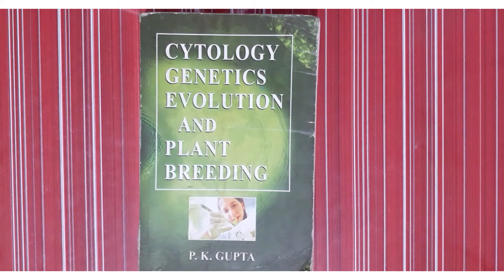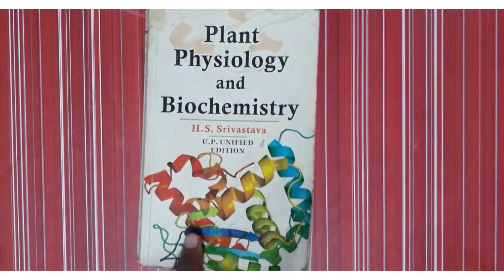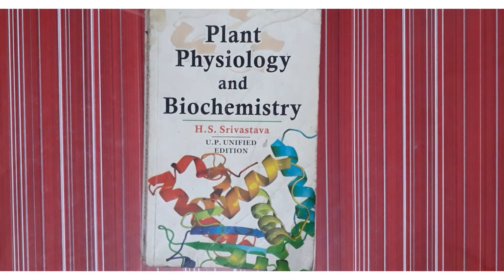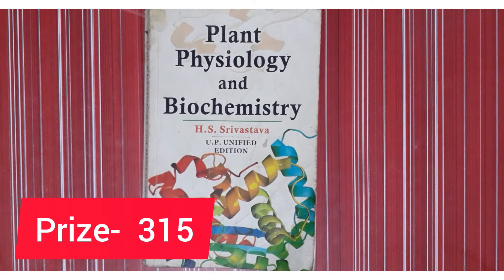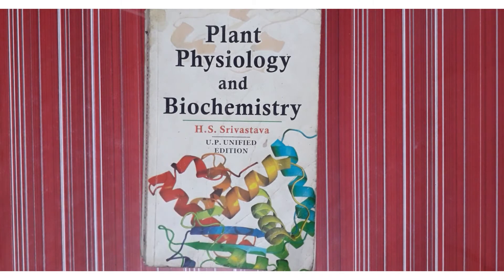The third paper of BSc second year is Plant Physiology and Biochemistry. The writer is HRS Srivastava. This book is also very affordable at 315 rupees. The biochemistry section is sufficient for BSc students and the topics are given in a very easy way.